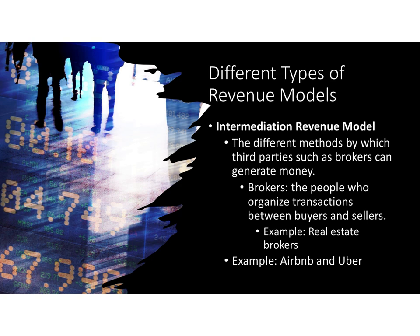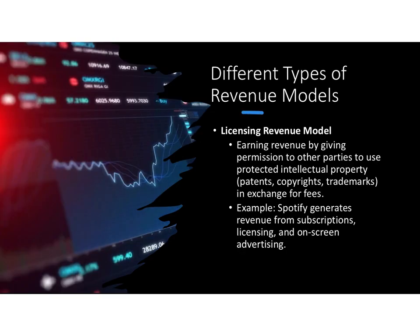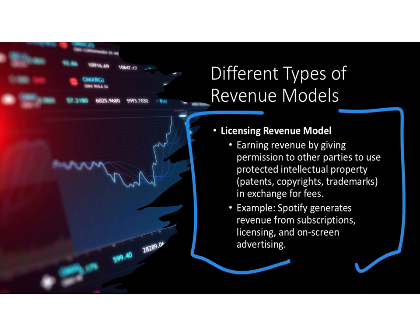Another type of revenue stream is intermediation — essentially a broker. If I list my home for sale, I'd retain a real estate broker who serves as the intermediary between the home seller and buyer. Licensing revenue is a huge opportunity. If you have a new product or a significant improvement on an existing one, you can license your intellectual property to a company — they manufacture and sell it under their brand name. You still own the IP, you're collecting royalty checks, and that is a licensing revenue model.